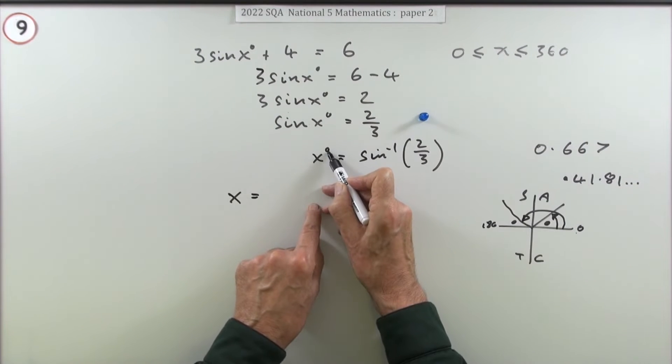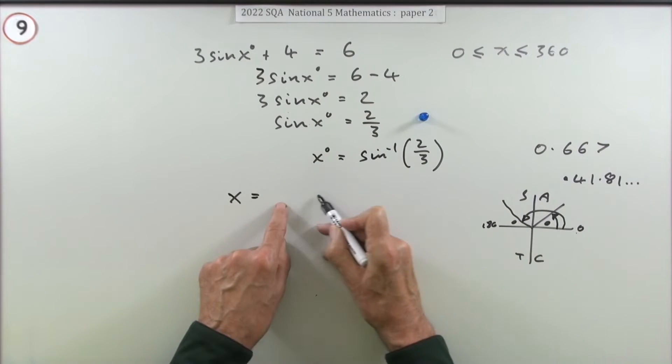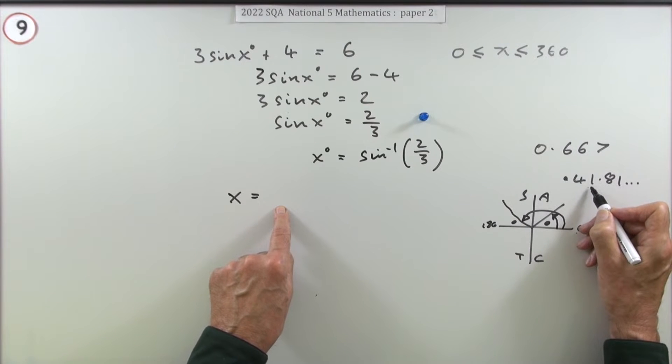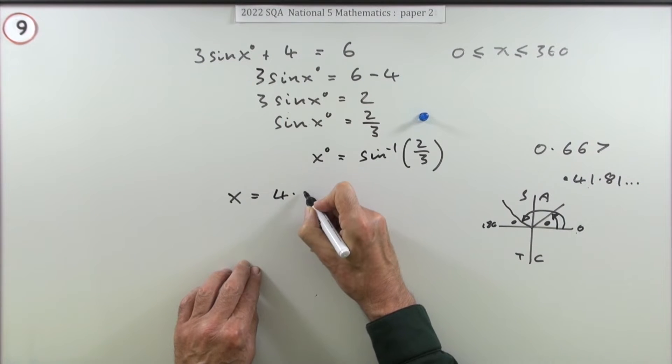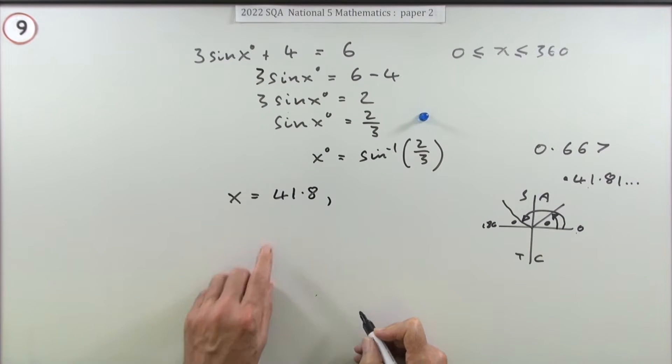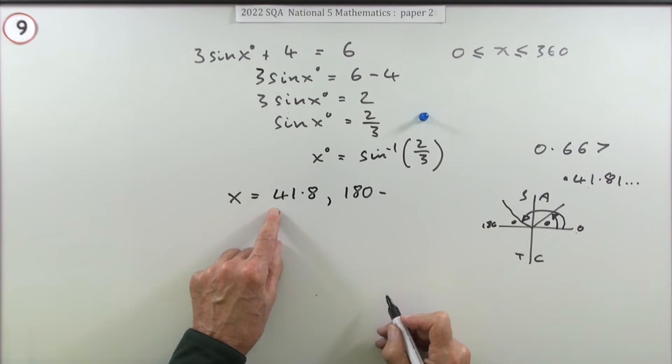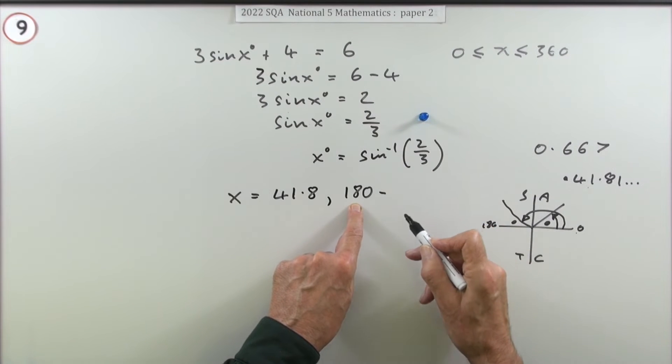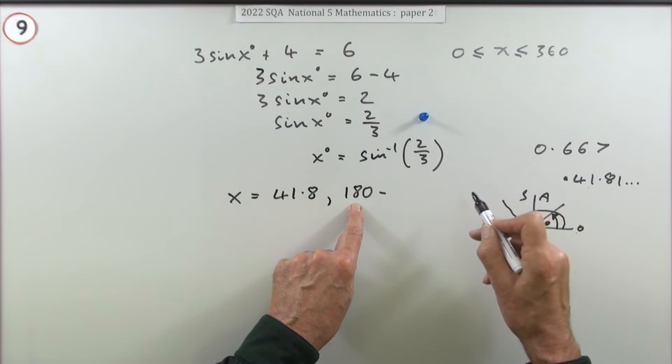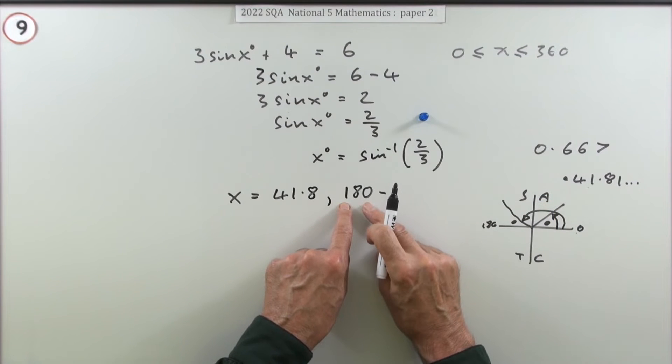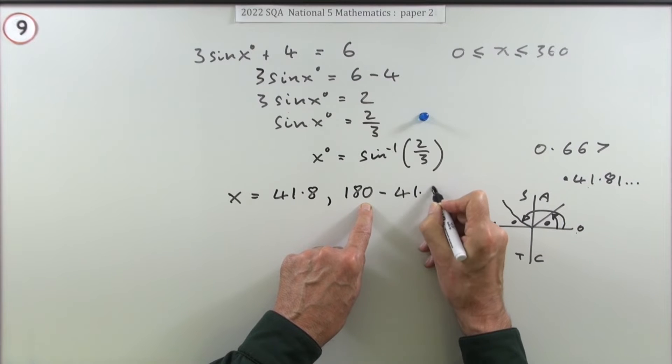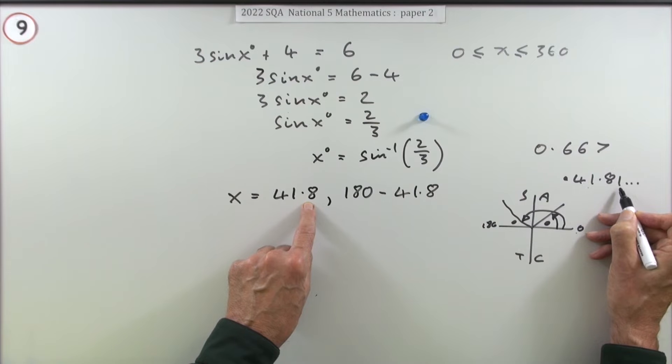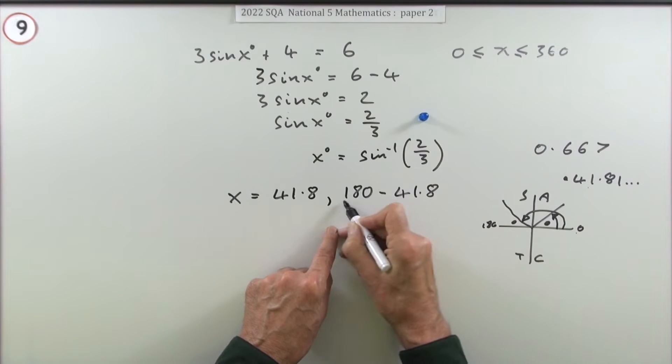Finally I can write x equals. One answer will be just what it says here: 41.8. And the other one will be 180 minus that. Now I don't really need to do 180 minus the whole lot and then round it off because that calculation doesn't involve another number that's been rounded off. There'll be no rounding errors since that's exact, so I can just go in with 41.8 here if I want my answer to one decimal place.